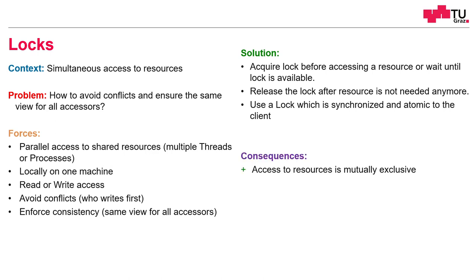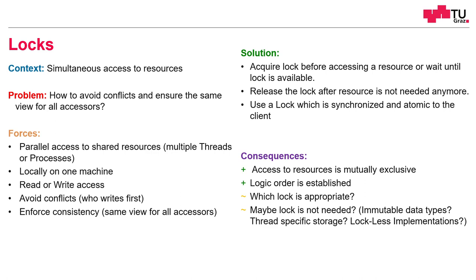The consequences are: after using locks, we can ensure that access to our resource is mutually exclusive. We establish a logical order amongst all threads. One liability is: which lock is appropriate? Should I use a mutex, a semaphore, a condition variable, or a reader-writer lock? Maybe I don't even need a lock — maybe I can use immutable data types and thread-specific storage to give each thread its own instance of a resource, or maybe there are some lockless implementations.